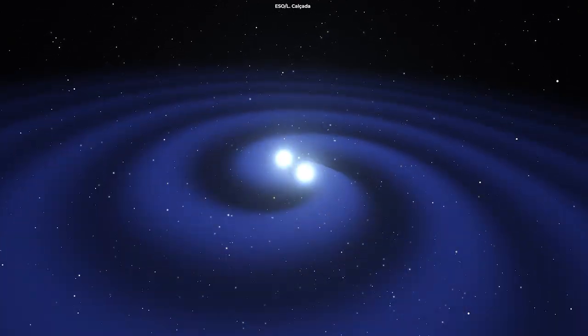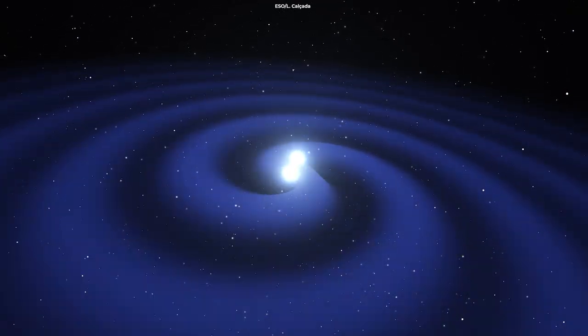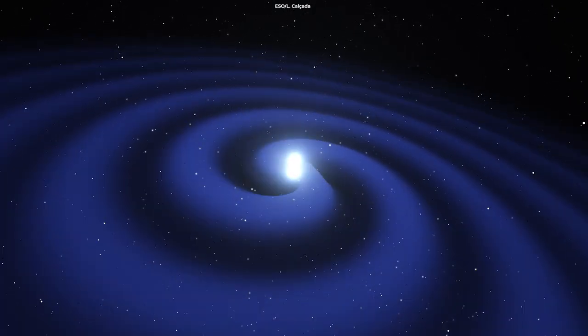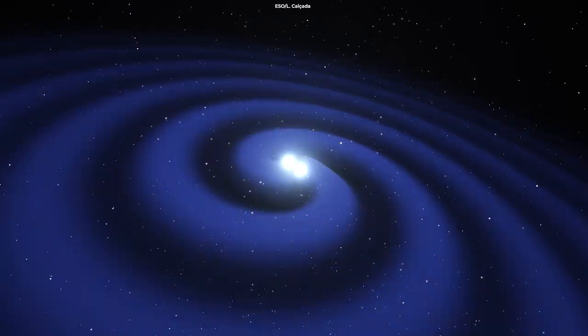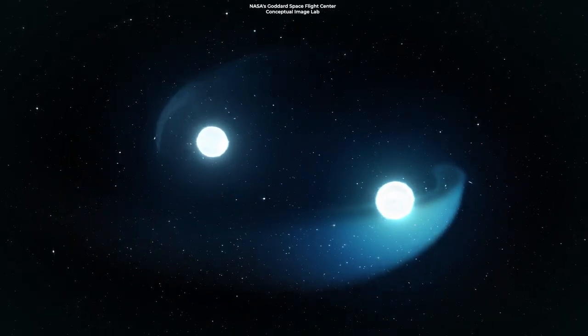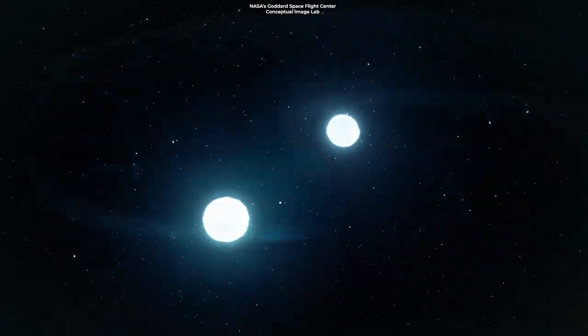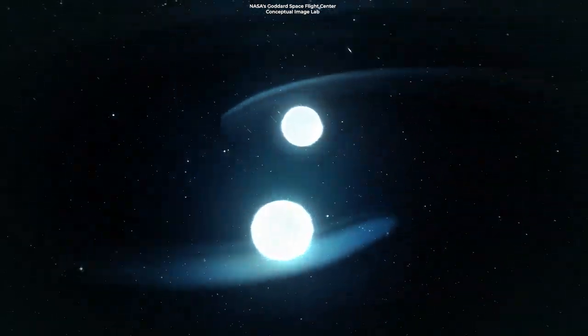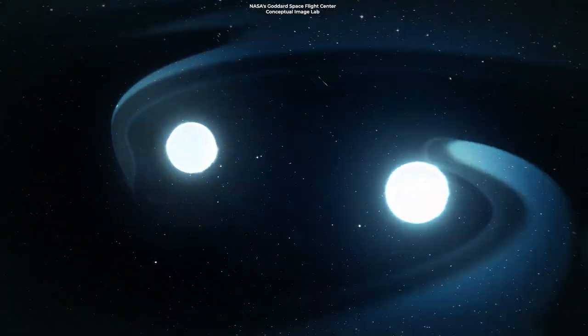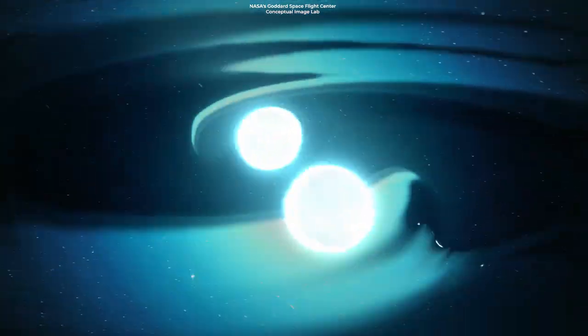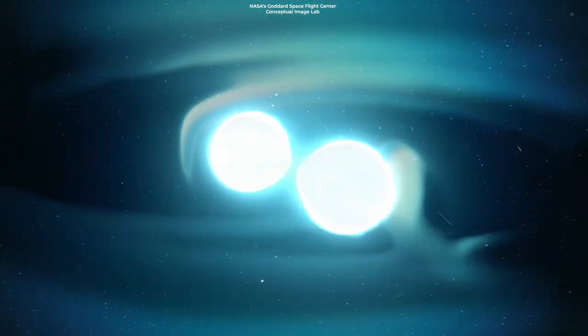Taylor and Hulse discovered that the stars were rotating progressively faster around each other in an increasingly tight orbit. According to Einstein's theory of general relativity, two neutron stars orbiting a shared center of mass emit gravitational waves, which would sweep away orbital energy and force the two stars to move closer together and decrease their orbital period.